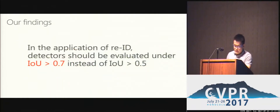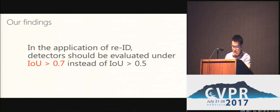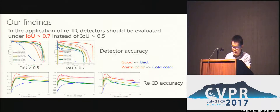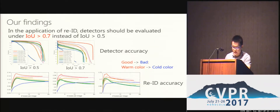The first finding is that pedestrian detectors should be evaluated under IOU greater than 0.7 instead of 0.5 for re-ID. The localization quality of a bounding box matters, so a poor one may compromise re-ID accuracy. The first row shows precision-recall of various detectors with IOU greater than 0.5 and 0.7. In the second row, we show the re-ID performance of different detectors, and find that the result is consistent with detection performance under IOU greater than 0.7.